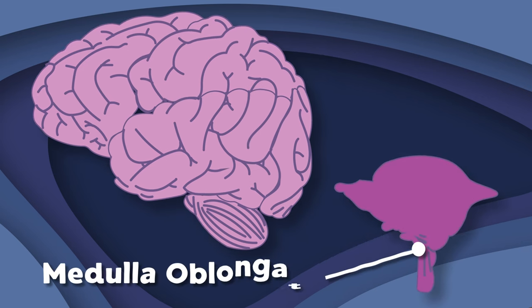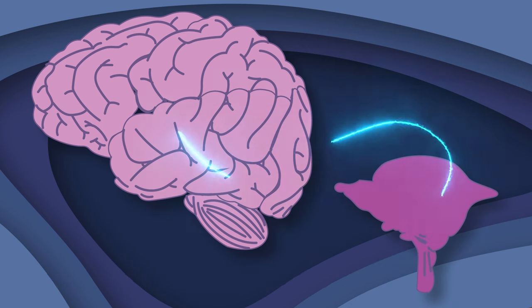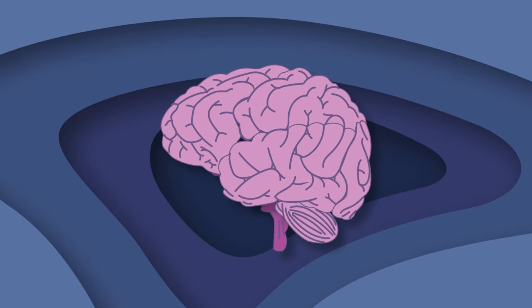The medulla oblongata takes all those signals and sends them to the limbic and cortical systems you should know. Perception and emotion are then formed for what you ate, then mixed with smells and texture which create this thing called taste.